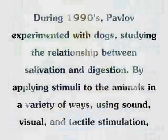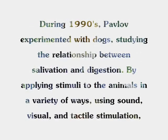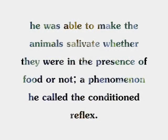During the 1990s, Pavlov experimented with dogs studying the relationship between salivation and digestion by applying stimuli to the animals in a variety of ways using sound, visuals, and tactile stimulation. He was able to make the animals salivate whether they were in the presence of food or not, a phenomenon he called the Conditioned Reflex.